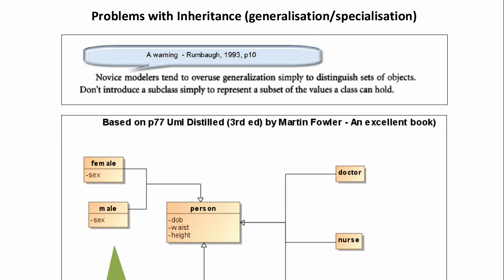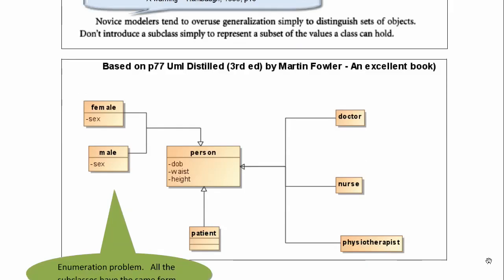First, let's consider an example from an excellent book by Martin Fowler called UML Distilled. It's got this nice little diagram with a Person superclass and various generalization sets. The first generalization set is male and female, so male and female are subtypes of person. Does that sound sensible?